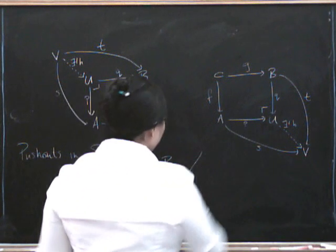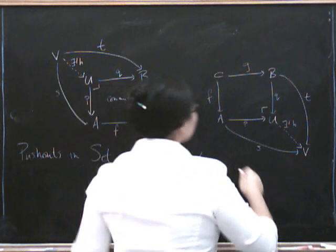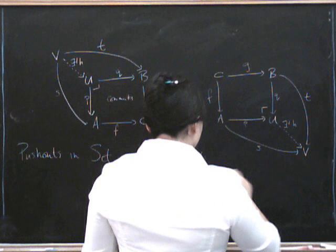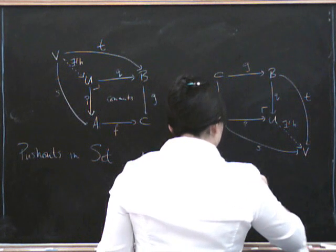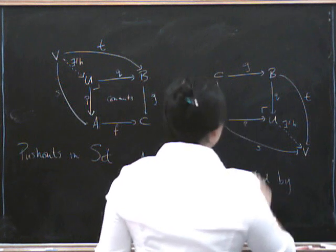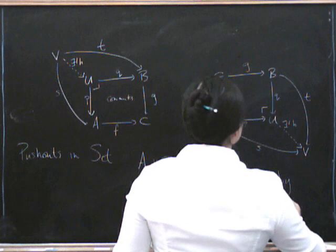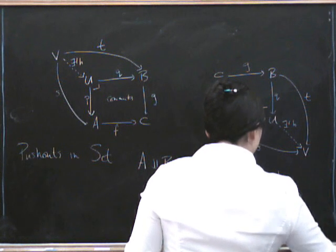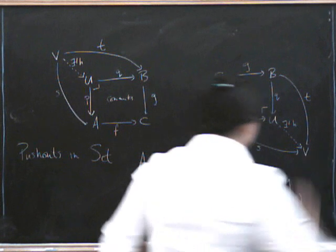So what we do is we quotient out by an equivalence relation. Which equivalence relation? Well, exactly the one we need, of course. The one that is generated by, so we quotient out by this equivalence relation, generated by F of C has to be equivalent to G of C for all C in C.